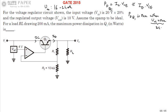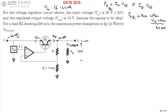For maximum power dissipation, we consider Vi at its maximum of 24 volts. The output voltage Vo is given as 10 volts, and the current flowing through the load is 200 milliamperes. This output node is at 10 volts.